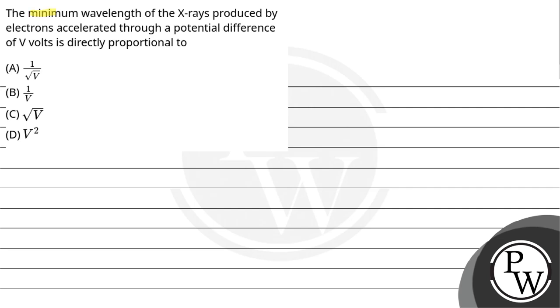Now, let us read the question. The minimum wavelength of the X-rays produced by electrons accelerated through a potential difference of V volts is directly proportional to: